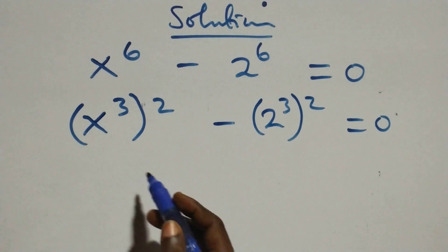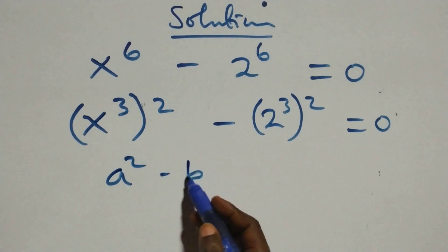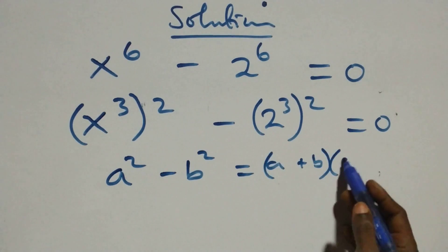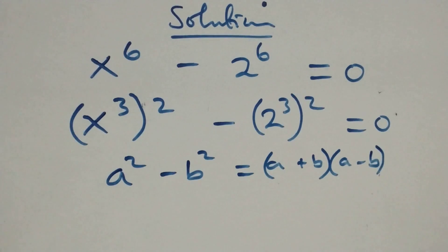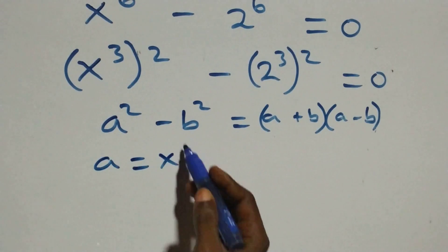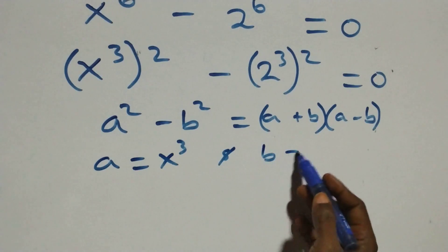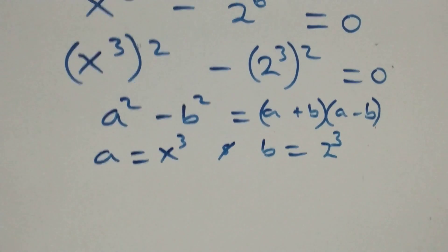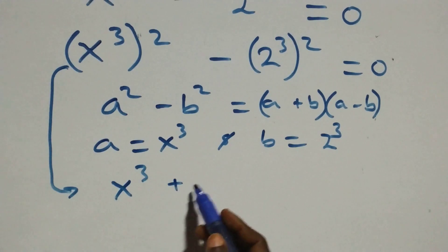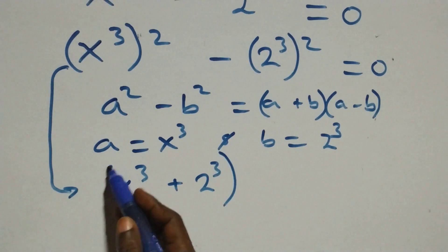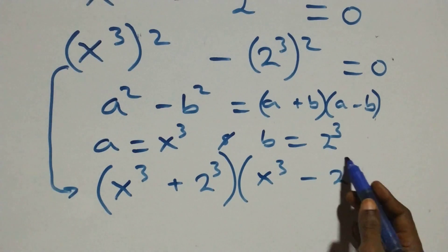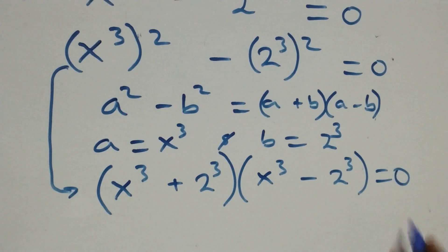This follows from a squared minus b squared, which equals (a + b)(a - b) — the difference of two squares. Here, a stands for x raised to power 3 and b stands for 2 raised to power 3. So we get (x³ + 2³)(x³ - 2³) = 0.